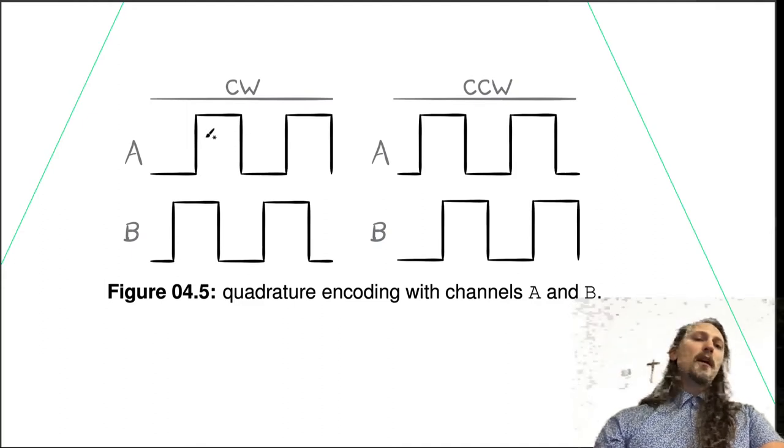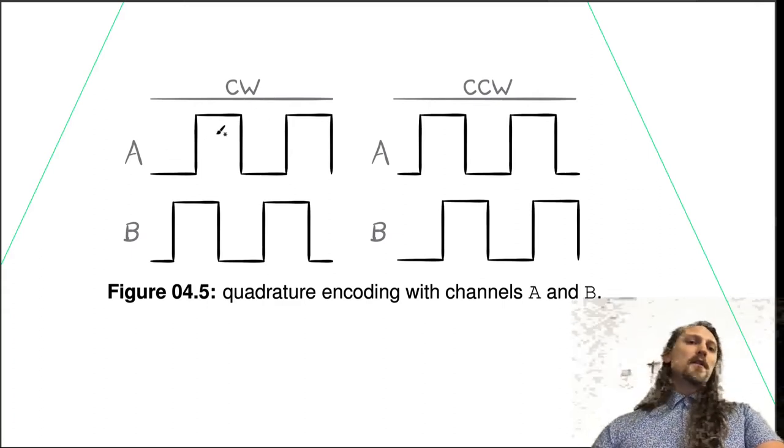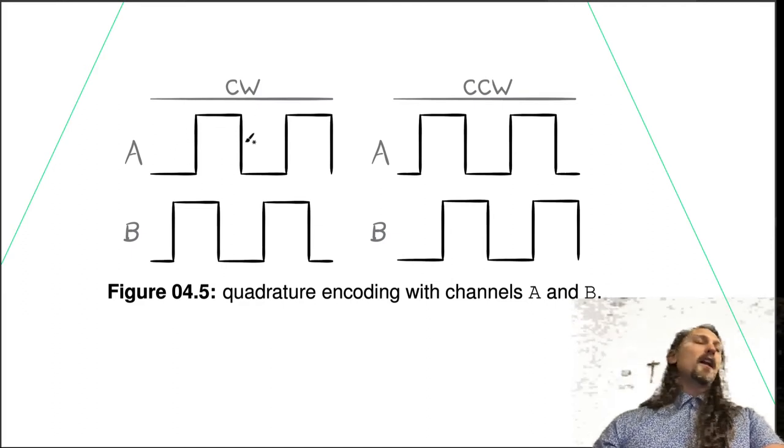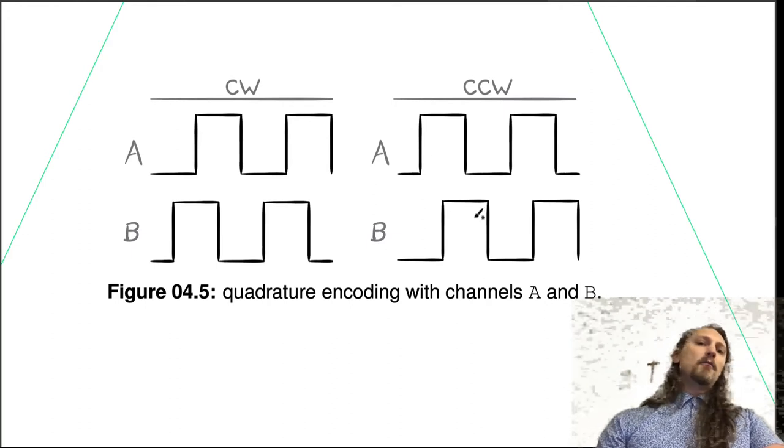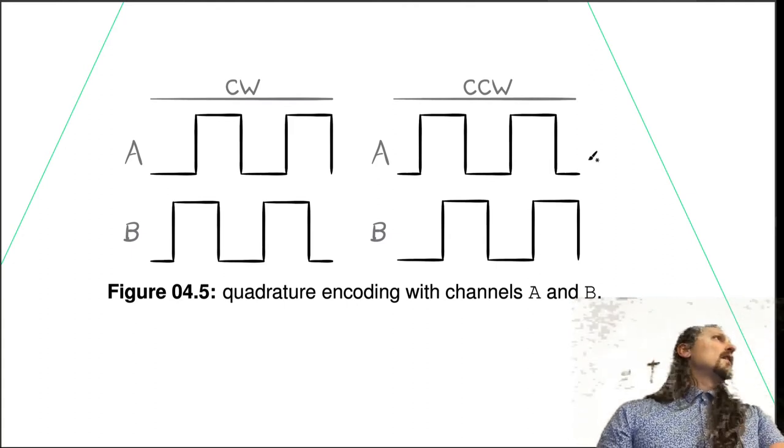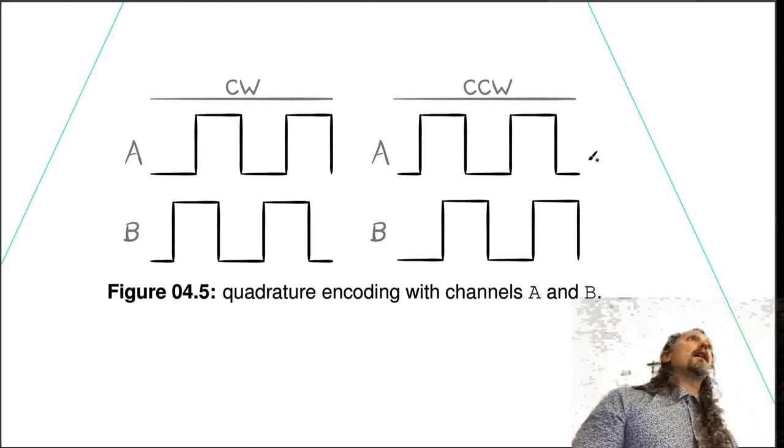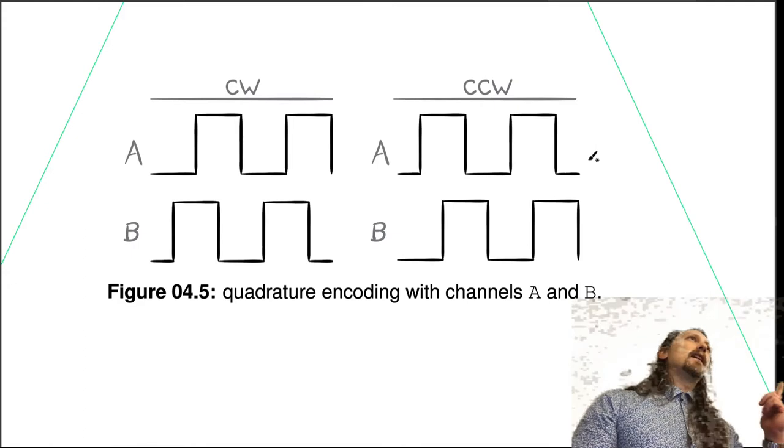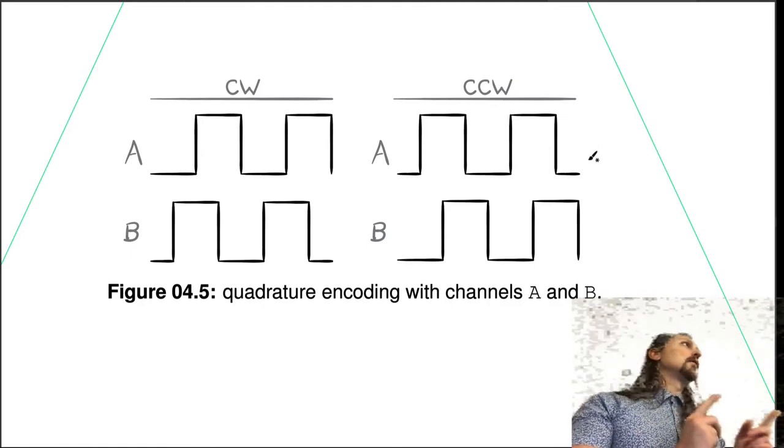In our case, this waveform where A is leading B is a clockwise rotation, so the pulse looks like it's shifted ahead in time. Counterclockwise is what happens when B is leading A. That's a clever technique we use in quadrature encoding where we can first detect that it moved, and then we can detect which direction it moved based on which one's leading the other. You can count based on the relative channels.